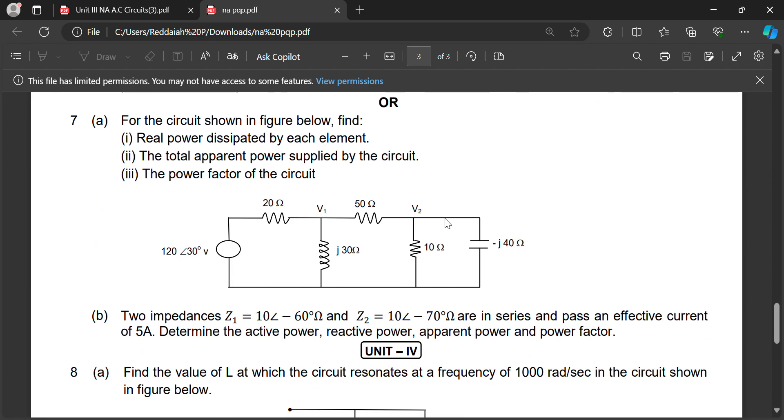Next, very simple problem they will give from Unit 3. For the circuit shown below, find the real power dissipated by each element. Each element, how much power will be dissipated? 50 ohm, what is the real power? 20 ohm, what is the real power dissipated by the element? Real power is VI cos phi.